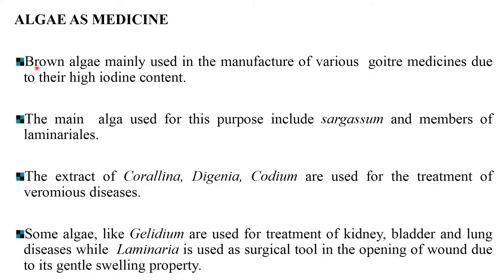Coming to the medicinal use of algae: brown algae are mainly used in the manufacture of various goiter medicines due to their high iodine content. The main algae used for this purpose are Sargassum and the members of Laminaria and Laminariales.